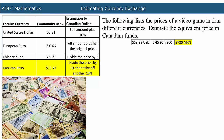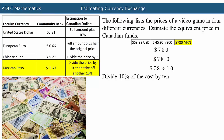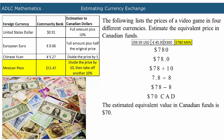Now, the Mexican peso can be calculated. The original price is 780 pesos. Move the decimal over one place to the left to find 10% of the original cost, which is $78. Divide that 10% value by 10 to find 10% of that value. 10% of 78 is 7.8, which is equal to about 8. Now, subtract that 10% from 10% of the original cost, $78. The estimated equivalent value in Canadian funds is about $70.